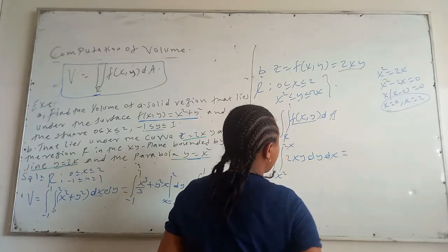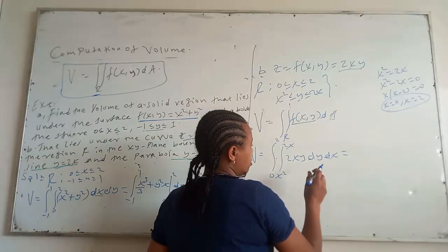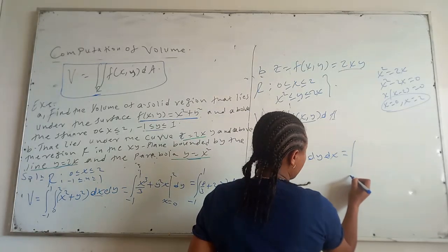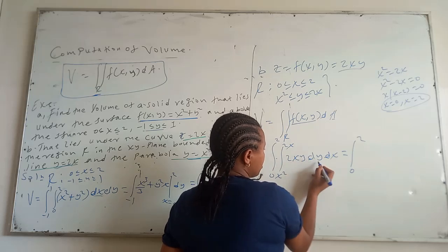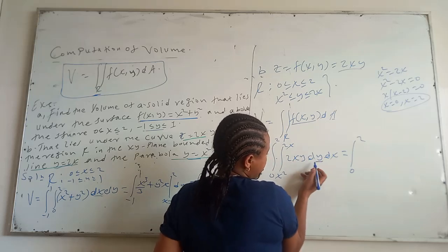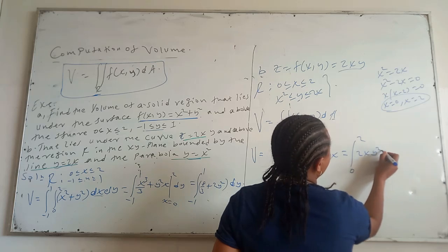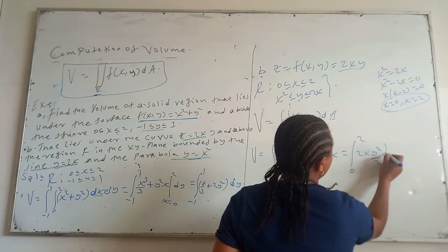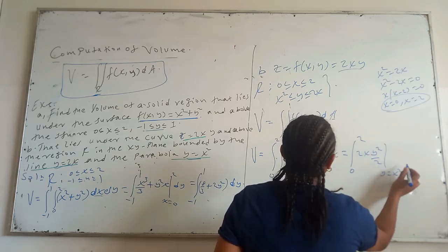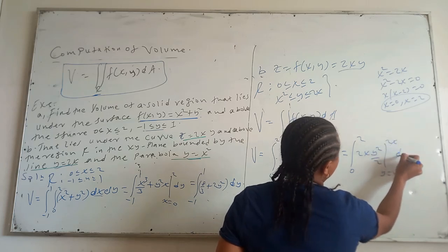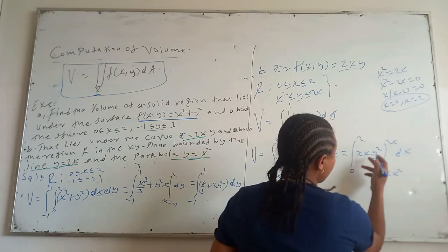Then the integral from 0 to 2: integrating 2xy with respect to y gives 2xy squared over 2, divided and evaluated from y = x squared to y = x, dx. The factor of 2 cancels, leaving xy squared evaluated at the limits.